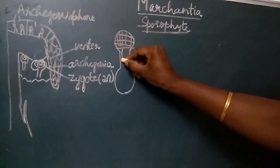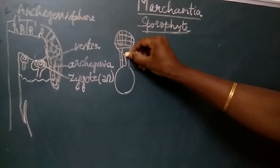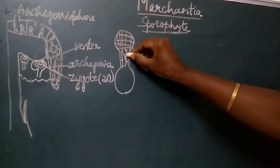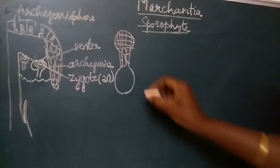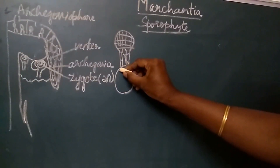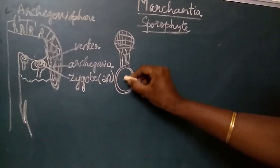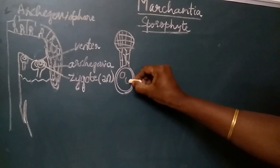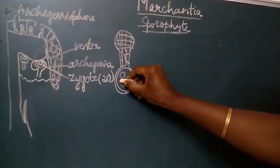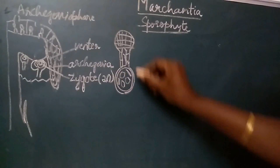The seta initially is stout with small cells; later on it elongates. The capsule has an outer layer called the amphithesium, inner spore mother cells, and elator mother cells which develop into elators.